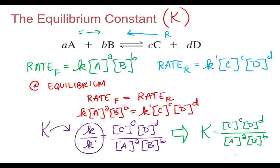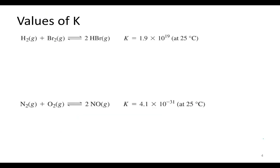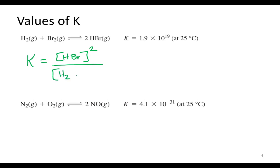We'll practice writing equilibrium expressions and think about what that number means — what it tells us about an equilibrium system. Let's write the equilibrium constant for the first equilibrium reaction: H₂ + Br₂ gives us 2HBr. So K equals the concentration of the product HBr raised to its coefficient, all over the concentration of H₂ times the concentration of Br₂.